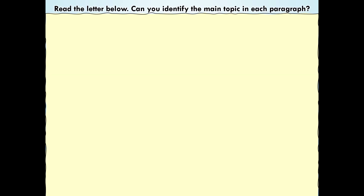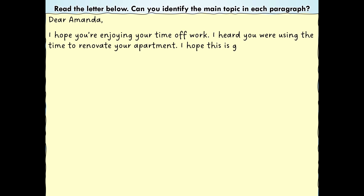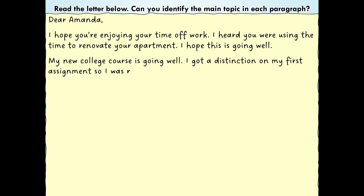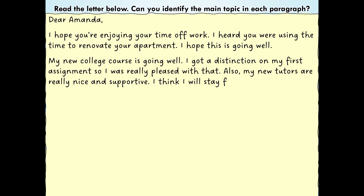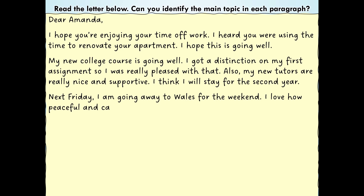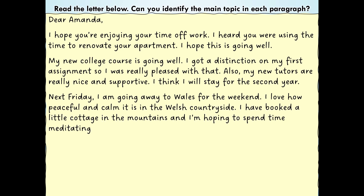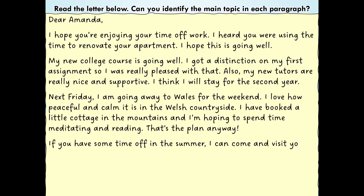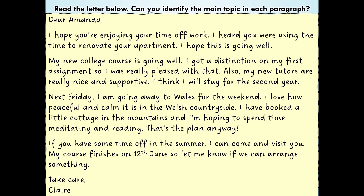I'm going to read a well-paragraphed letter. Read along with me and see if you can identify the main topic in each paragraph. The paragraphs are separated using a complete empty line. Dear Amanda, I hope you're enjoying your time off work. I heard you were using the time to renovate your apartment. I hope this is going well. My new college course is going well. I got a distinction on my first assignment, so I was really pleased with that. Also, my new tutors are really nice and supportive. I think I will stay for the second year. Next Friday, I am going away to Wales for the weekend. I love how peaceful and calm it is in the Welsh countryside. I have booked a little cottage in the mountains and I'm hoping to spend some time meditating and reading. That's the plan anyway. If you have some time off in the summer, I can come and visit you. My course finishes on the 12th of June, so let me know if we can arrange something. Take care, Claire.